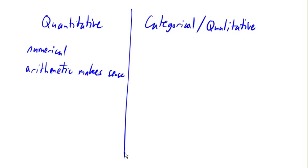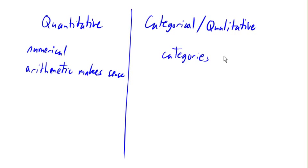Categorical or qualitative data, as the name suggests, tends to be categories — groupings of objects into different categories. Let's look at some examples that'll help.